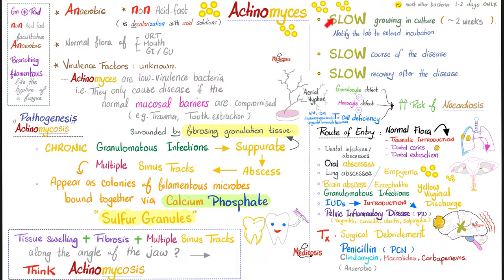Actinomyces, like Nocardia, are very slow to grow in culture. Nocardia takes about a week to grow; Actinomyces are even slower — about two weeks for culture results to come back. The course of the disease is also very slow, and recovery from the disease is slow, just as with Nocardia.